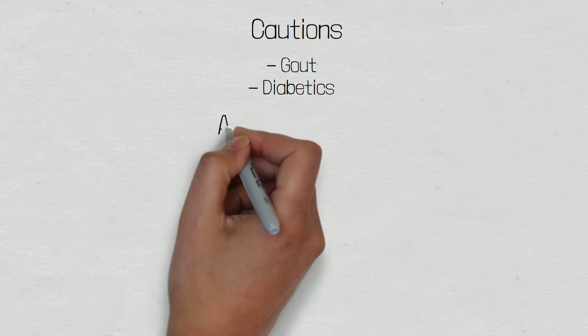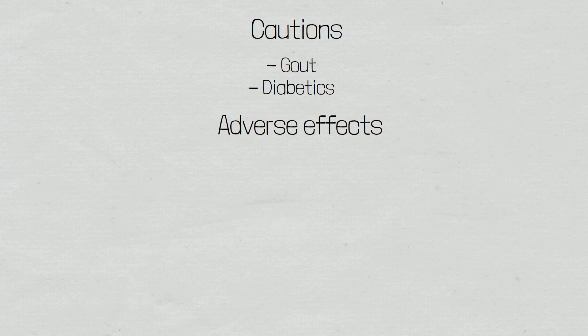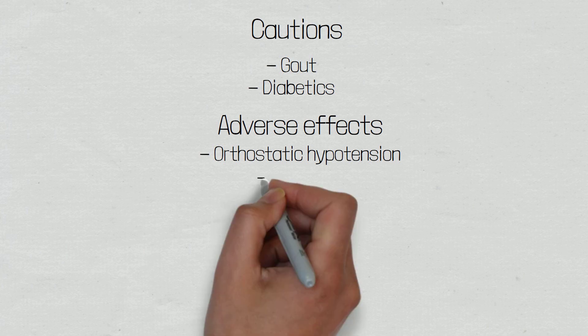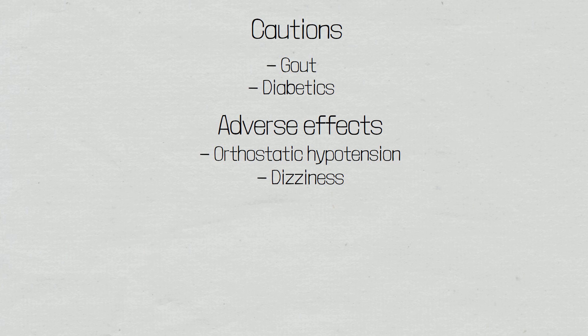So let's now look at some of the adverse effects that patients may experience when taking feruzamide. Common side effects include orthostatic hypotension, also known as postural hypotension, which refers to a drop in blood pressure when standing from a sitting or laid down position, which can cause the patient to become dizzy or even faint. This is caused by a reduction in circulating fluid volume and vasodilatory effects of feruzamide. Patients may also experience dizziness, which may be due to orthostatic hypotension or due to the ototoxic effect of feruzamide. A similar sodium-potassium-2-chloride co-transporter is responsible for regulating endolymph within the ear, so the patient may experience vestibular symptoms.